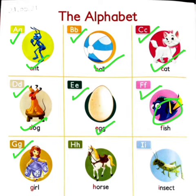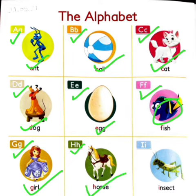Which letter is this? G says G — Girl. H says Her — Horse.